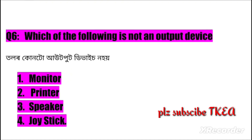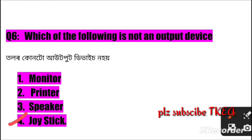Question number six: Which of the following is not an output device? Option one: monitor, two: printer, three: speaker, four: joystick. The right answer is number four: joystick.